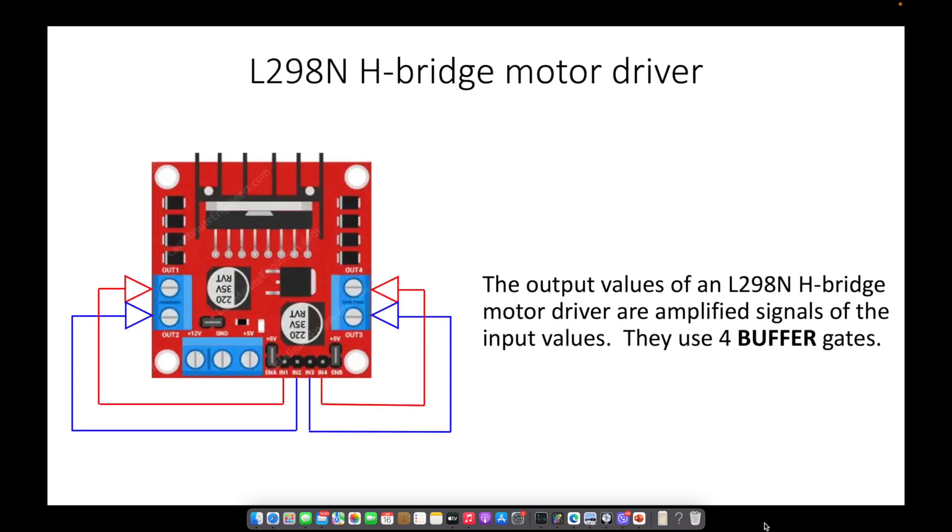The output values of an L298N H-bridge motor driver are amplified signals of the input values. They use 4 buffer gates.